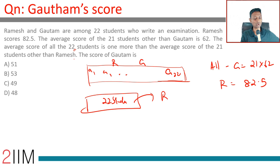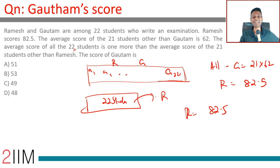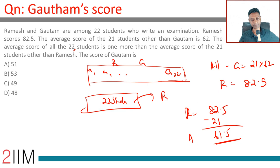So Ramesh is taking out more than the average — Ramesh scores 82.5, he's taking out more than the average. How much more than the average? 21 more than the average. Because if you had taken just the average, the remaining would have been the same. He's taking more than the average by 21, so the average is 82.5 minus 21 = 61.5.